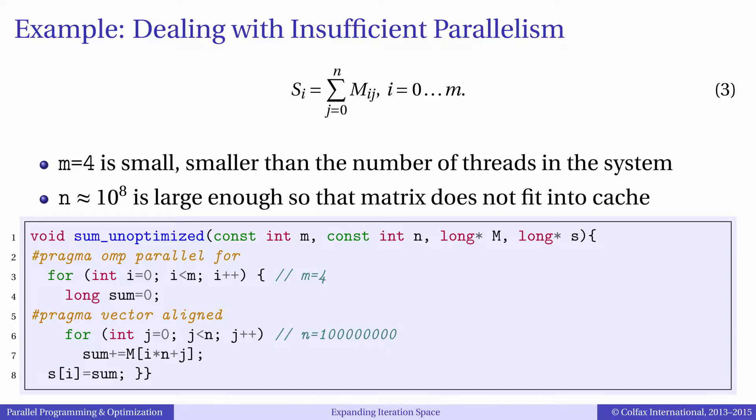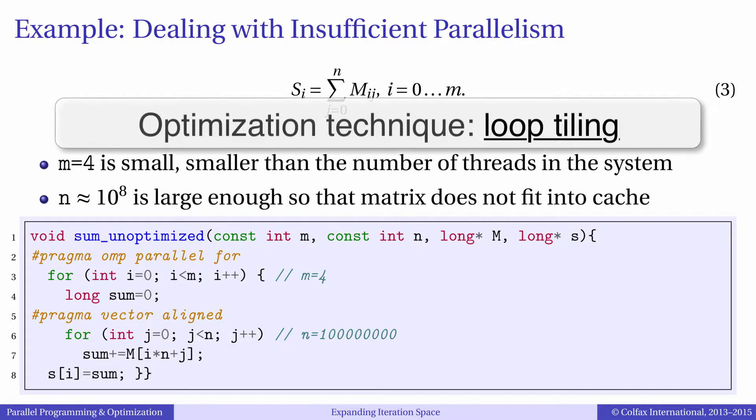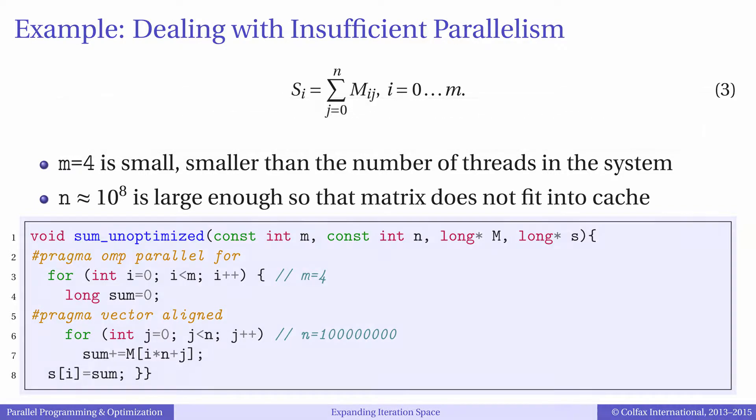We will see later in the course that situations with too few iterations in the outer loop often arise after another optimization, loop tiling, which is usually implemented for memory traffic improvement.